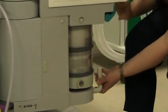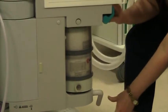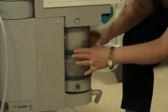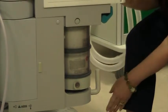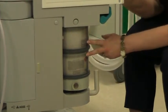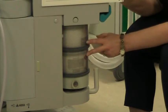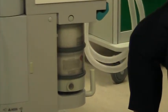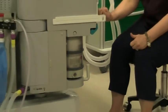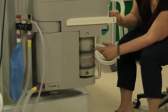So again, pull this out to let it down, put it back up, and snap it into place. Every time after you change an absorbent, you need to check and make sure that your circuit does not have a leak and is airtight.